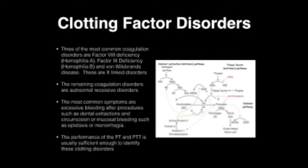Three of the most common coagulation disorders are factor VIII deficiency, which is hemophilia A, factor IX deficiency, which is hemophilia B, and von Willebrand disease. These are all X-linked disorders. The remaining coagulation disorders are autosomal recessive disorders.